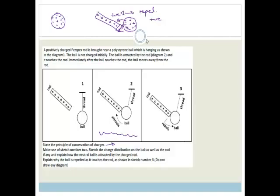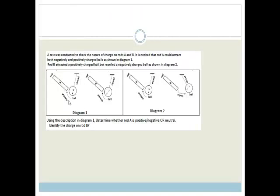Right, that's quite a nice question. Let's see what else we've got. It says, similar type of question. A test was conducted to check the nature of the charges on rods A and B. It is noticed that rod A could attract both negatively and positively charged balls, as shown in figure 1. But rod B attracted a positively charged ball, but repelled a negatively charged ball, as shown in diagram 2. Using the description in diagram 1, determine whether rod A is positive or negative or neutral, and identify the charge on rod B.